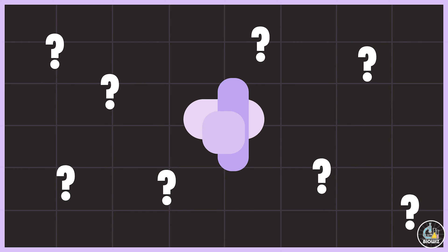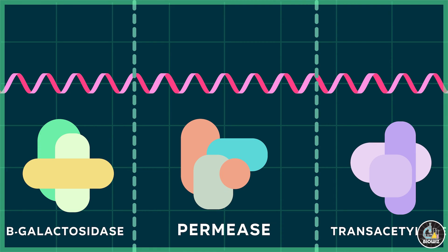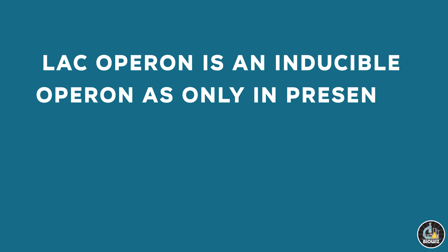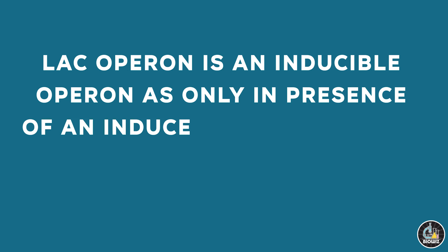These enzymes work together to metabolize lactose, thus enabling the bacteria to use it as an energy source. The lac operon is therefore called an inducible operon, as only in the presence of an inducer — that is, lactose — are the enzymes required for lactose metabolism produced.